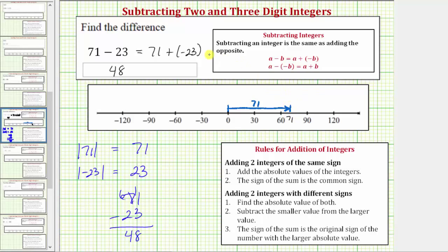From here, because we're adding negative 23, which is the same as subtracting 23, we would move left 23 units from positive 71. So if we go left 23 units to here, it takes us back to positive 48. 71 plus negative 23, or 71 minus 23, equals positive 48.